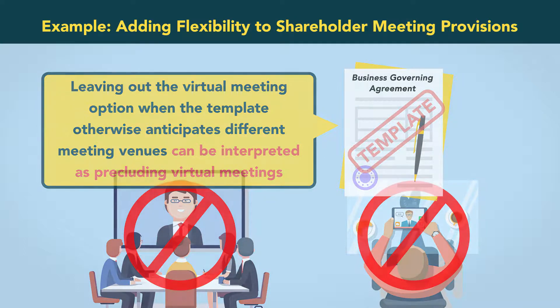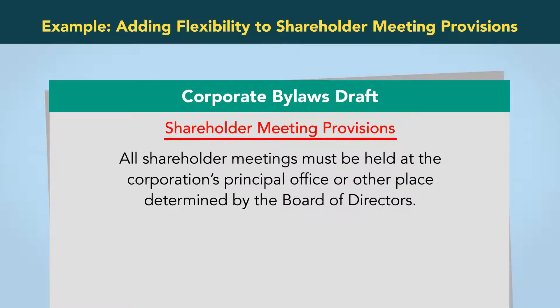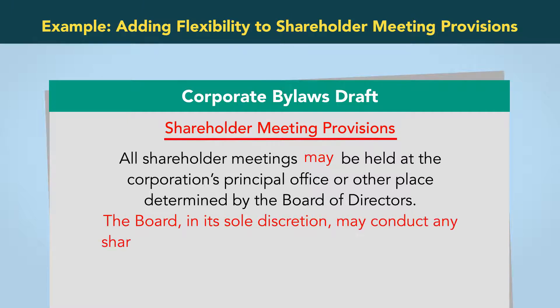Now let's consider how a minor change to the template text can provide the board with the flexibility to hold meetings in a variety of physical and virtual locations. It might say: "All shareholder meetings may be held at the corporation's principal office or other place determined by the board of directors. The board, in its sole discretion, may conduct any shareholder meeting via remote electronic means."